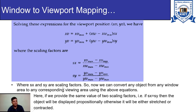Using these equations we can convert any object from any window area to any corresponding viewing area. If we provide the same value for both scaling factors, that is if sx equals sy, then the object will be displayed proportionally; otherwise it will be either stretched or contracted. If sx and sy are equal, scaling is uniform. If the values are greater than one, the object will be zoomed or stretched; if less than one, the object will be contracted or reduced in size.